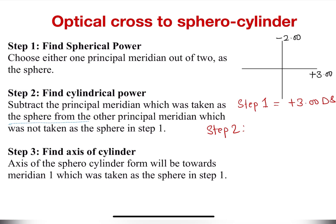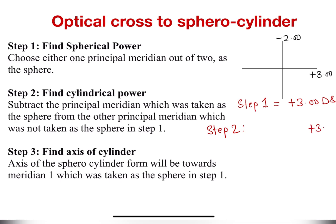Step two is to find the cylindrical power. We're going to subtract the principal meridian which was taken as the sphere from the other principal meridian which was not taken as the sphere. In our case, we subtract the sphere value from the other meridian power, which gives us minus five diopters of cylinder.